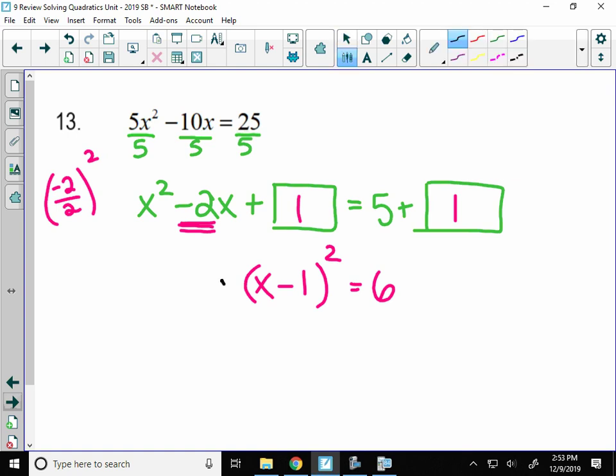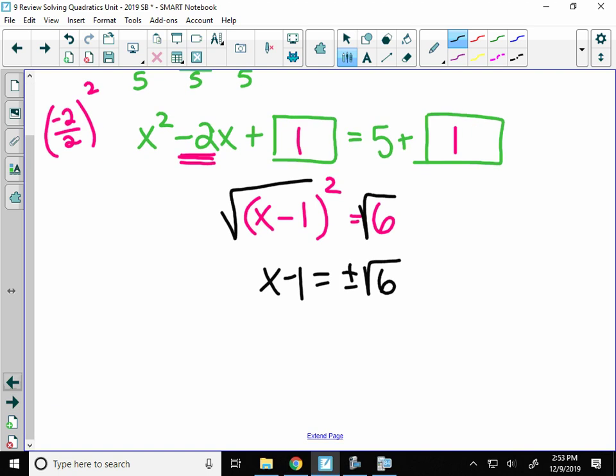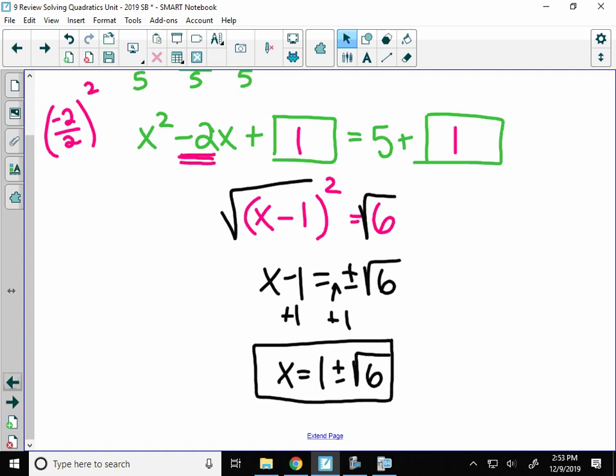Alright. Now, to solve this, I'm going to square root both sides. I get x minus 1 equals plus or minus the square root of 6. And then all I have to do is add 1. When I add 1, it goes right in front of the plus or minus. And this is your final answer. It's an exact answer. It's irrational, so you could not factor. But then that's it.